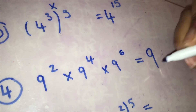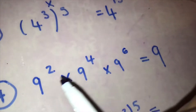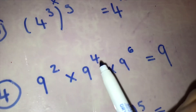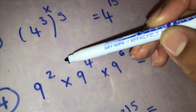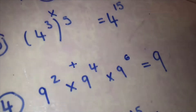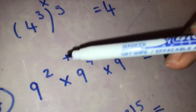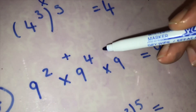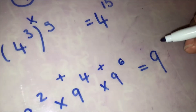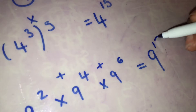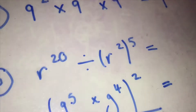Next one — you're simplifying this. You've got three nines, so you put nine down because that's the only variable you're using. You add the powers because we're multiplying: two add four is six, add six again is twelve — nine to the power of twelve.